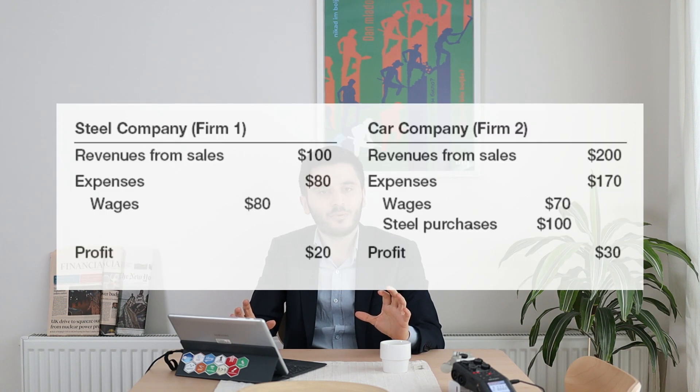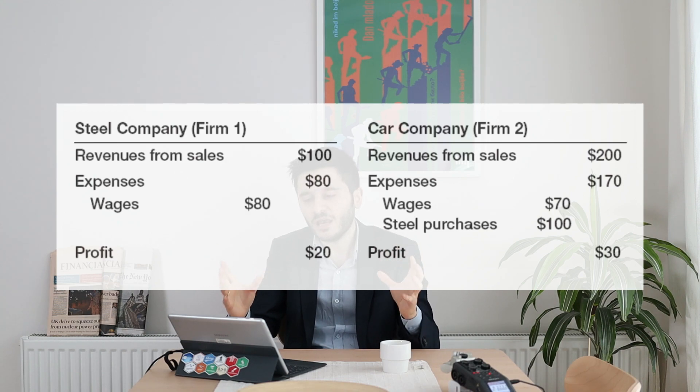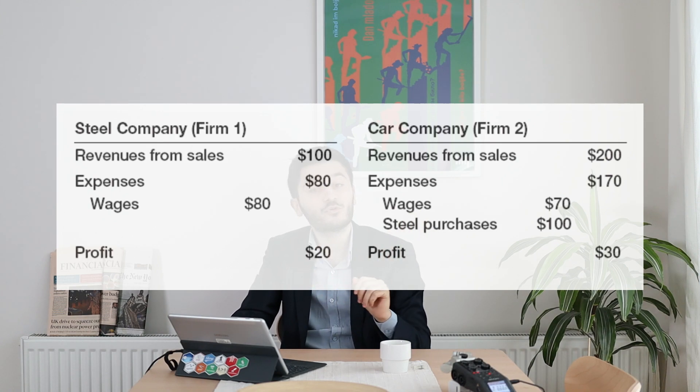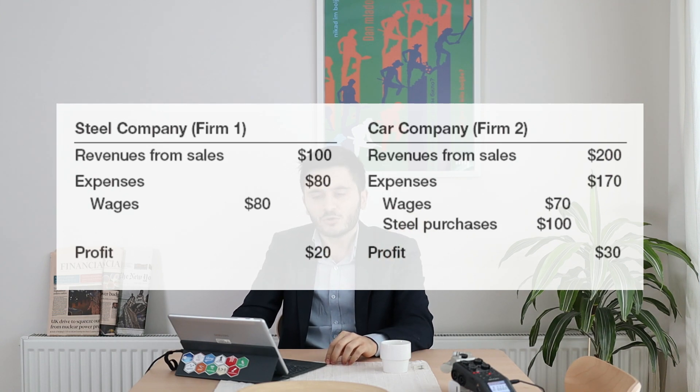National income and product accounts were developed at the end of World War II as a measure of aggregate output. The measure of aggregate output is called gross domestic product, GDP. How would you define aggregate output in the economy? This is an important question. Look at this example, which consists of two firms. Consider an economy which consists of these two firms: the first one produces steel, the second one produces cars.